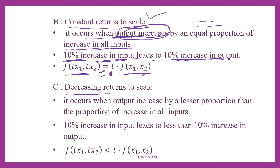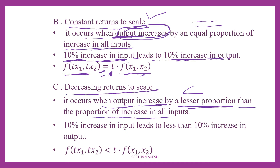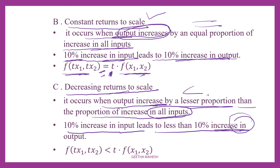The third stage is decreasing or diminishing returns to scale. It occurs when output increases by a lesser proportion, so output increases less than the proportion of increase in all inputs. A 10% increase in input leads to less than 10% increase in output — for example, 5%. Increase in output is less than increase in input. This stage we call decreasing returns to scale.